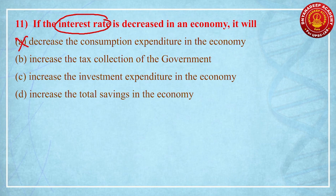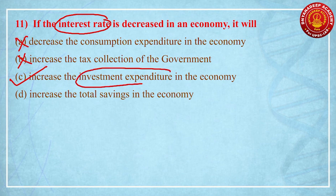Second option says it increases tax collection of the Government of India — that is also not correct, because when there is less and less interest, people spend more but the money coming to the government is in a lower amount. Third option is the most correct: increase in investment expenditure in the economy, as more and more people will take loans and spend more money for investing into the economy since loans are cheaper. Fourth option — that it will increase total savings — is wrong, because when you get a cheaper loan and spend more, you do not go for saving.